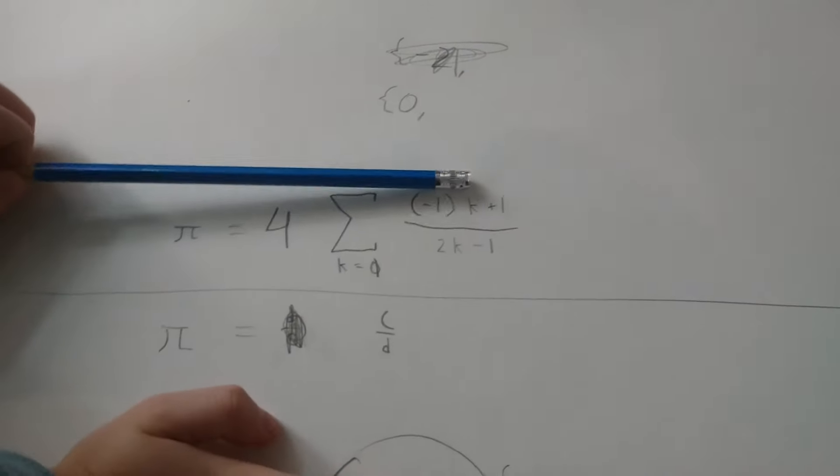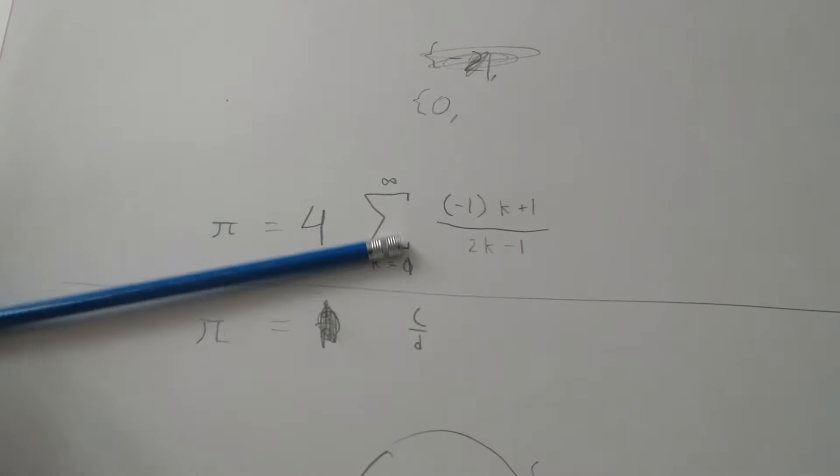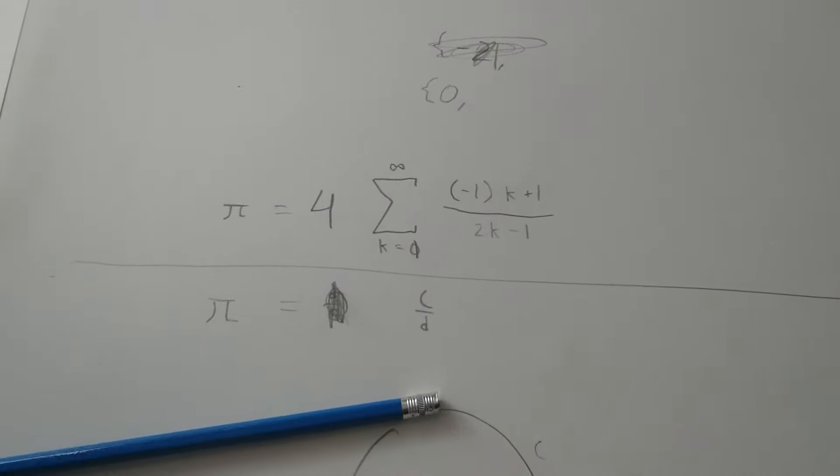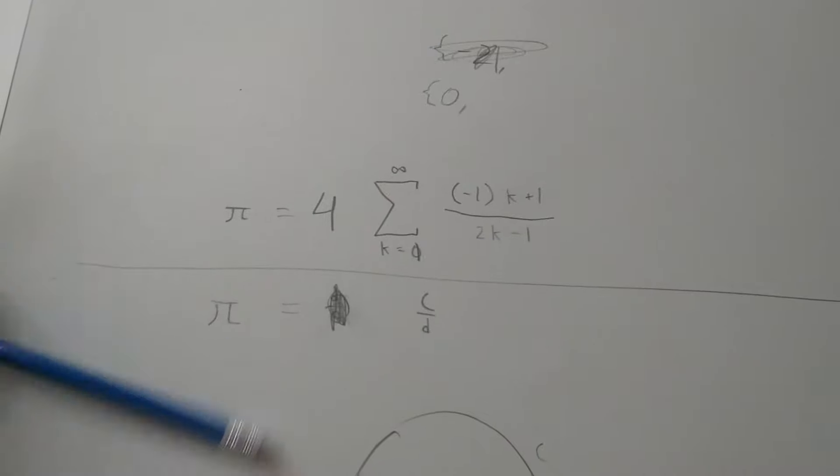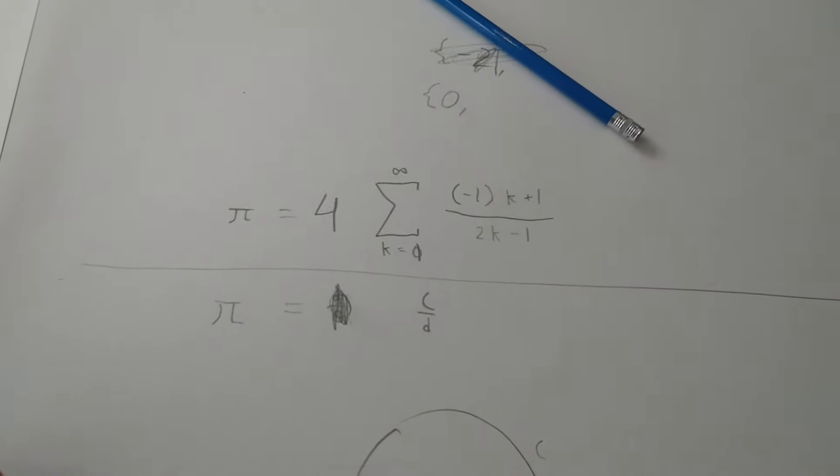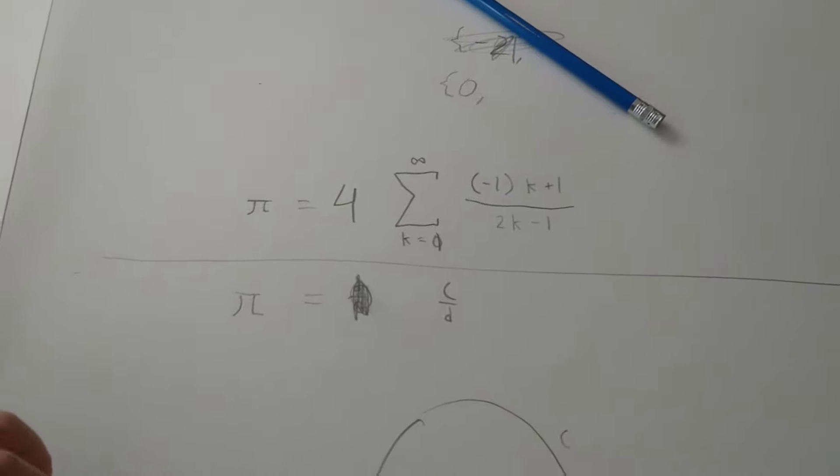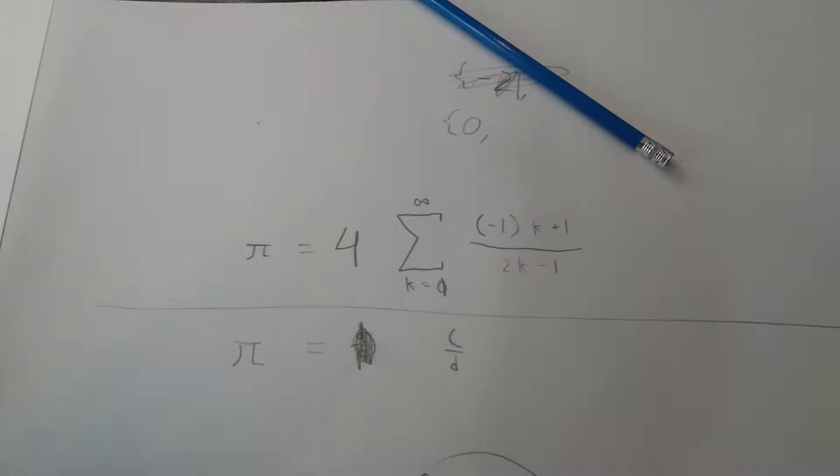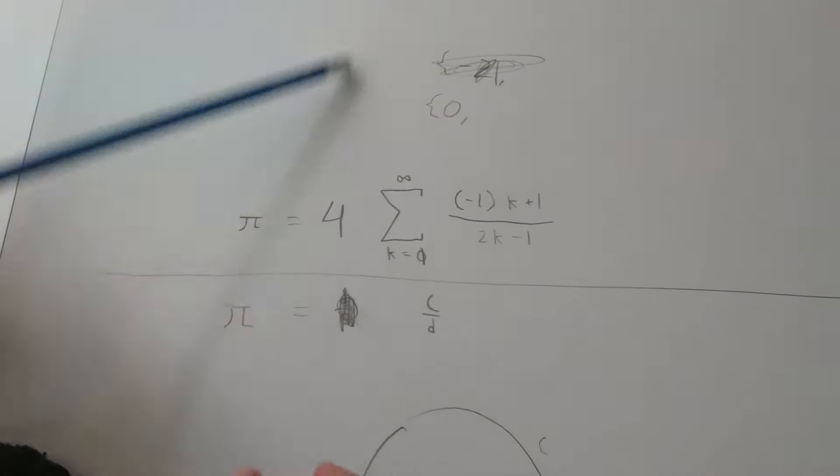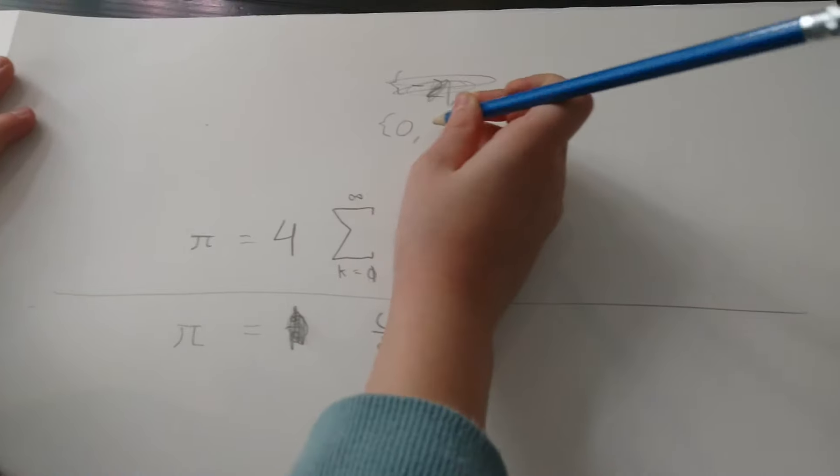And then negative one k, negative one k, that's negative two plus one, which is negative one, divided by two k minus one, which is, wait, two k, in this case it's four, minus one is three. So that's negative one.